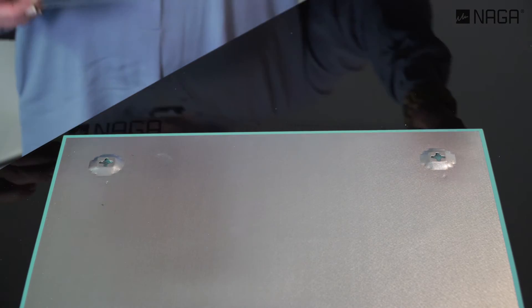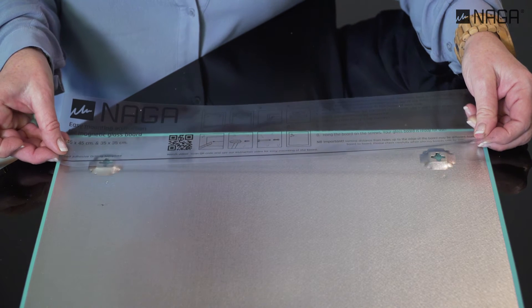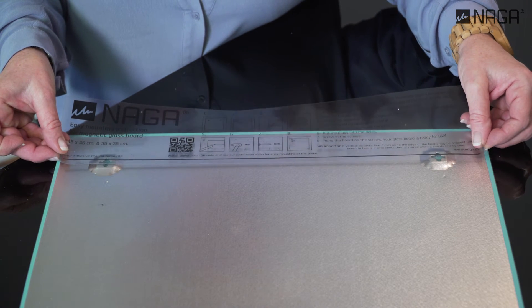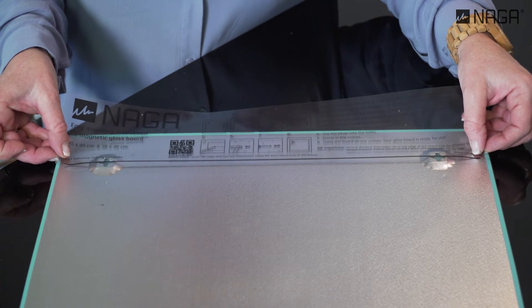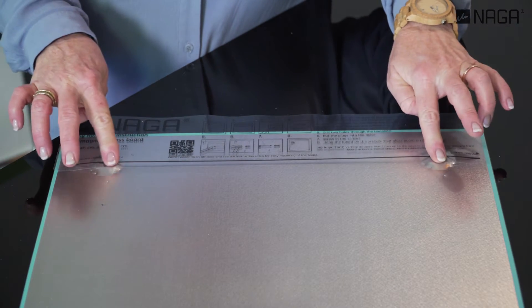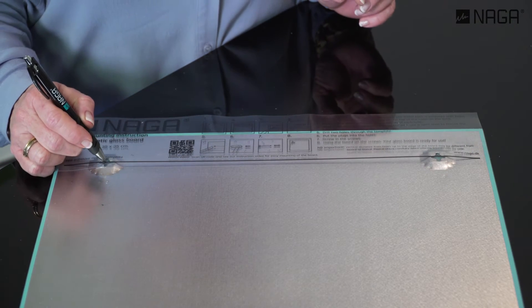On the back of the board, you'll find a metal plate prepared with holes ready for mounting. Attach the adhesive drill template on the top of the holes on the back of the board. Mark with a pen on the line in the centre of each hole.